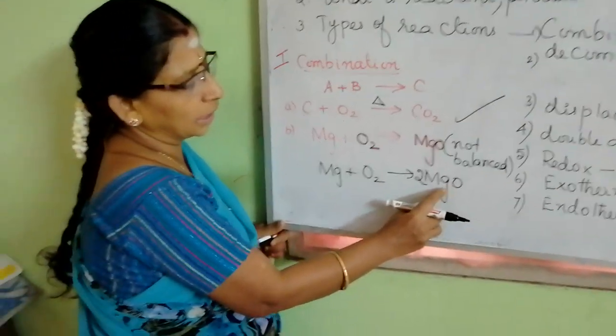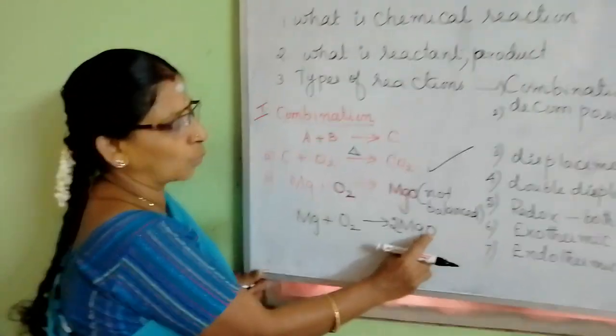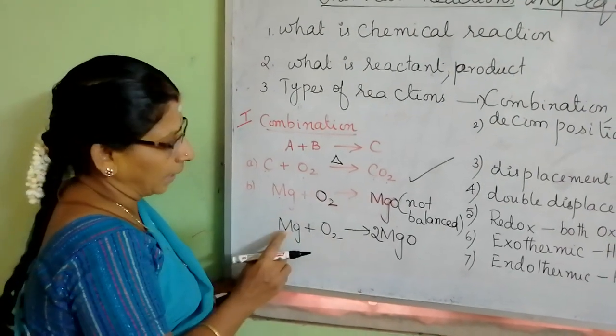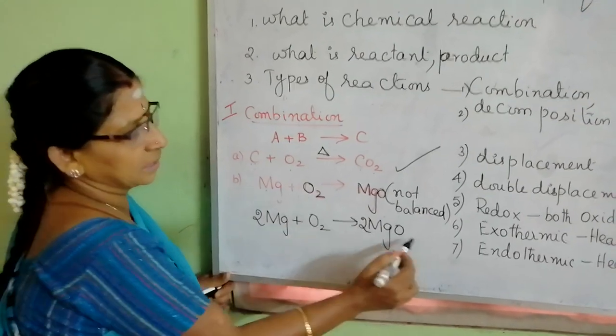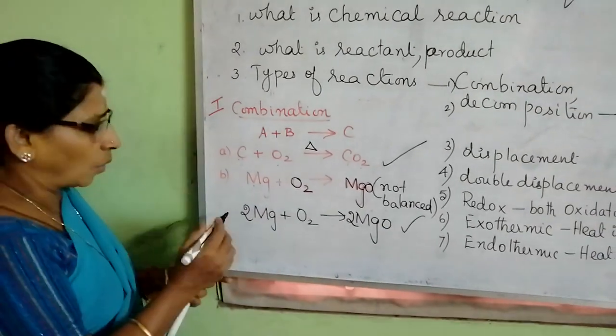We are putting the 2 in front. Again, it has become products in two magnesium, two oxygen. Two oxygen, okay. But two magnesium is not there. So, I am putting 2 in the front. Now, it is balanced. The reaction is balanced. Now, likewise, we can write the next example.